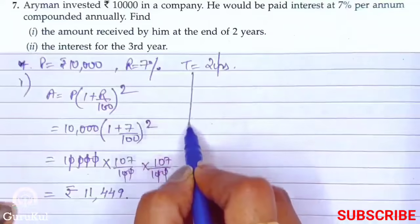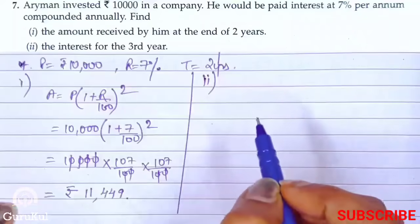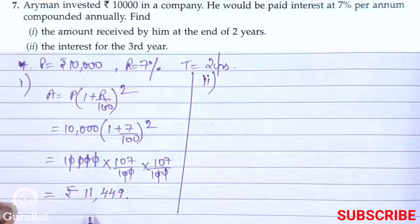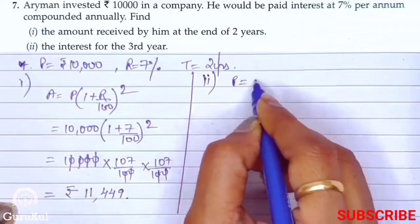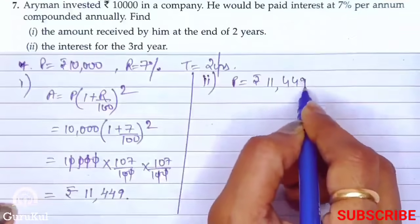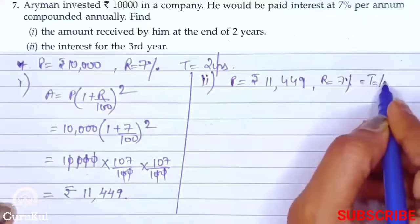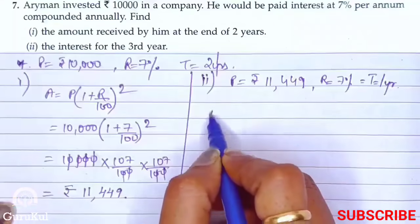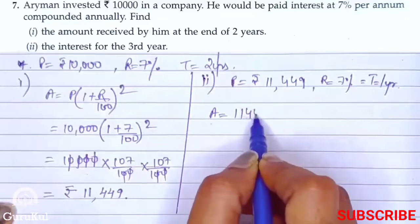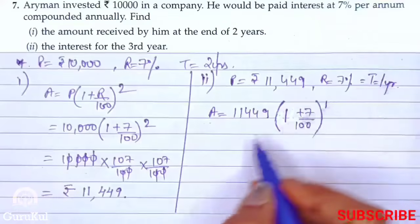Now we move to the second part of this question, where we need to find the interest for the third year. In compound interest, the amount of one year becomes the principal for the next year. So our new principal is Rs. 11,449, rate remains 7%, and time is 1 year.